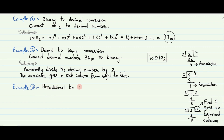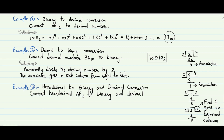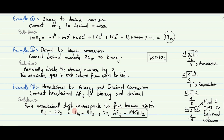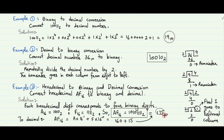Example 3 is hexadecimal to binary and decimal conversion. We will convert the hexadecimal number AF base 16 to binary and decimal. Conversion between hexadecimal and binary is easy because each hexadecimal digit directly corresponds to 4 binary digits. For example, A base 16 is equal to 1010 base 2, and F base 16 is equal to 1111 base 2. For conversion to decimal, multiply each digit in the hexadecimal number with the base raised to the power of its column number, and the result is 175 base 10.